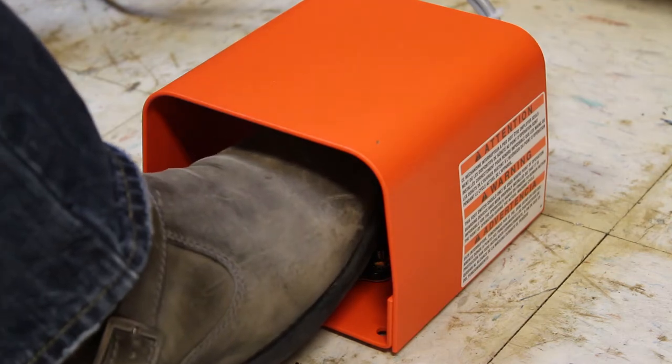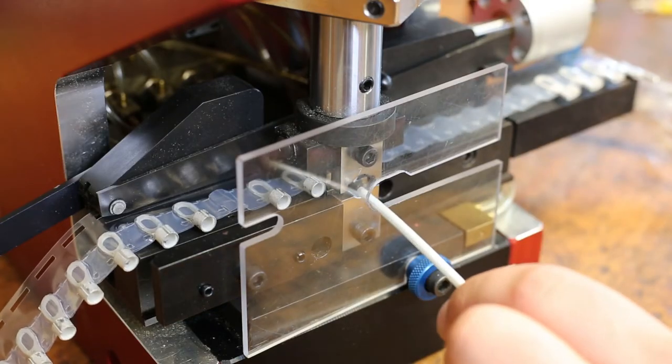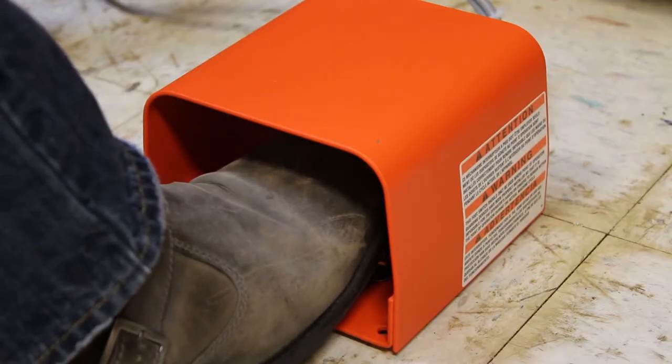The two-step foot-activated crimp lever allows you to complete crimps easily with your foot, so your hands can be free to handle the conductor and speed up crimps.